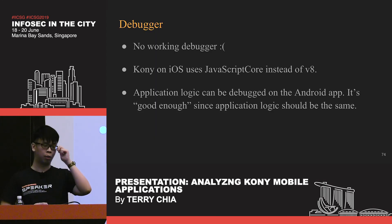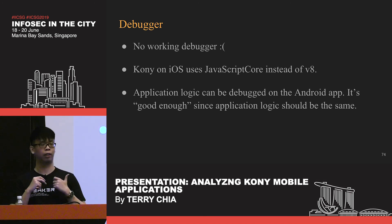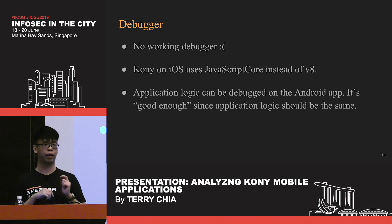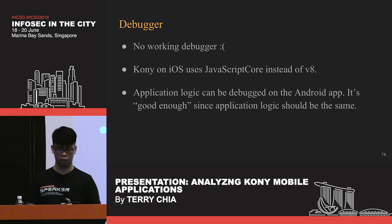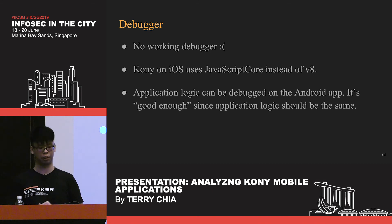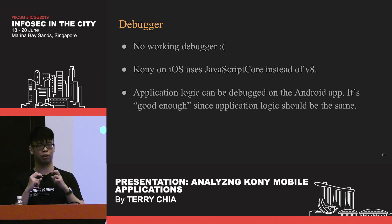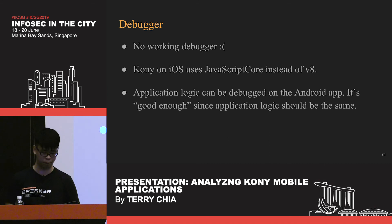For the iOS debugger, I was not able to come up with a working solution because Kony on iOS uses the JavaScriptCore engine instead of V8. However, this is good enough for most situations because the application logic should be exactly the same as the Android application — the promise of Kony is a single code base for multiple platforms. Aside from platform-specific interactions like biometrics, the application logic should be identical between iOS and Android.